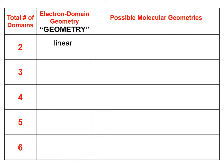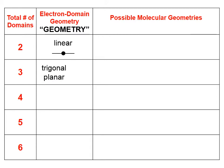If the species has two domains, then the geometry is linear. I represent it with a stick figure where the solid line indicates a domain — one to the left and one to the right, both in the plane of the screen. If there are three total domains, that's a geometry called trigonal planar, and it has a stick diagram that looks a lot like a Mercedes-Benz symbol.